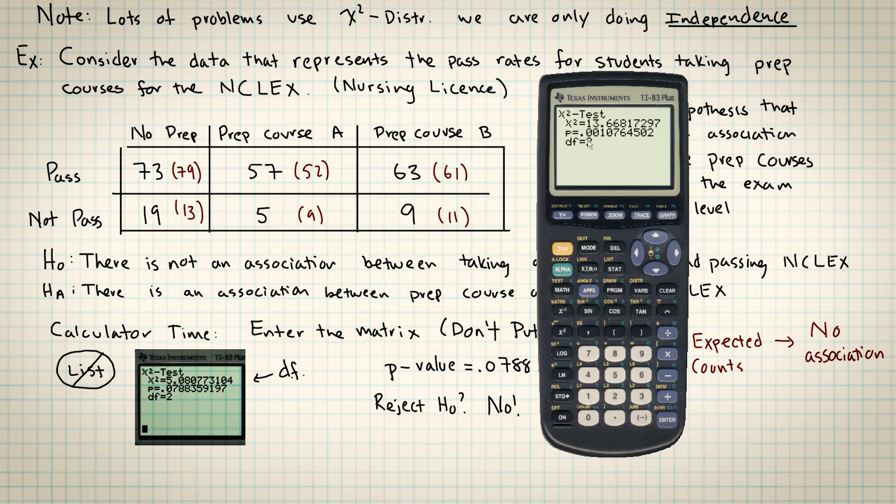Now I do end up with a very small p-value. 0.001 is less than 5%. So the takeaway here is when the observed counts are very close to the expected counts, that's when you're going to not reject. And then the farther that the observed counts get from the expected counts, the more it makes it look like there is an association. So the more likely you are to reject the null hypothesis.